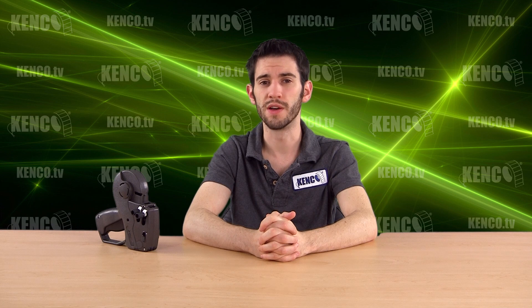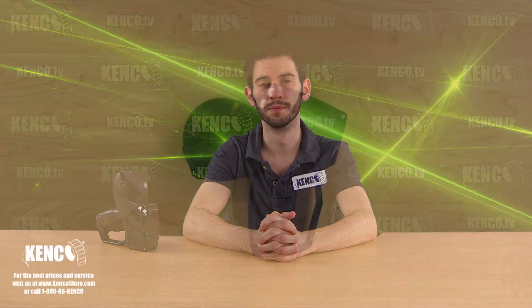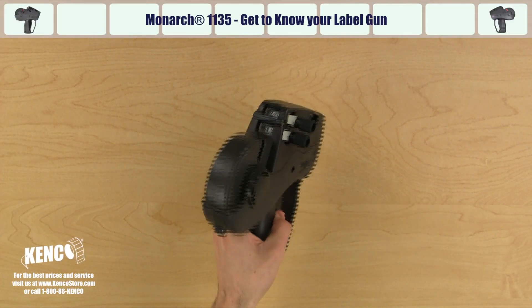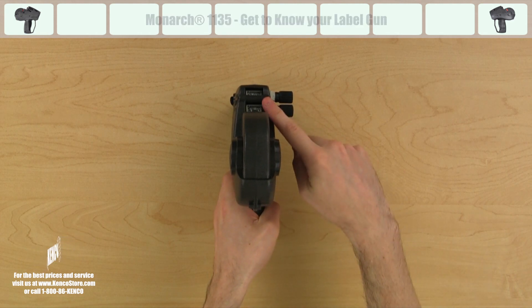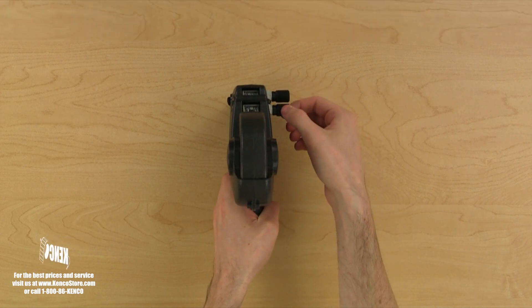Before we begin, let's familiarize ourselves with several key components of the gun. Let's pick up the gun with our left hand and take a look at the top. Right away, you'll notice the printhead and the adjustment dials.